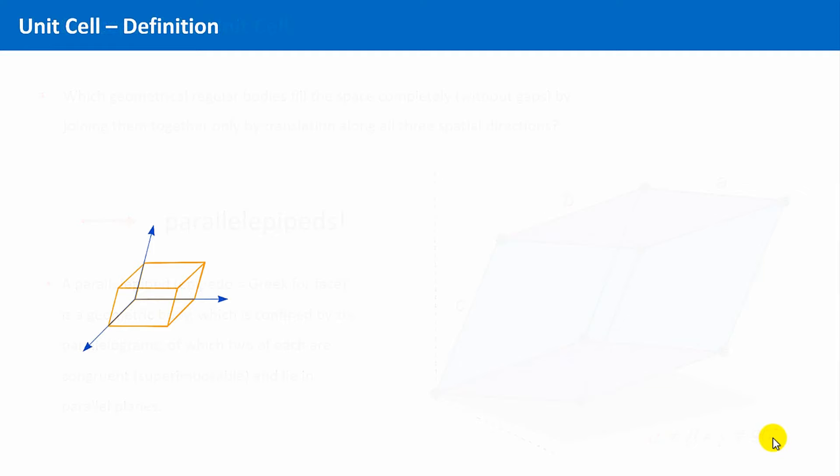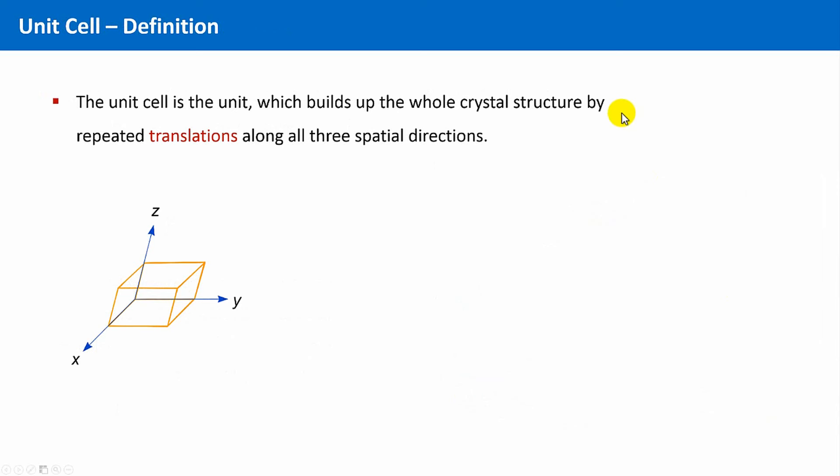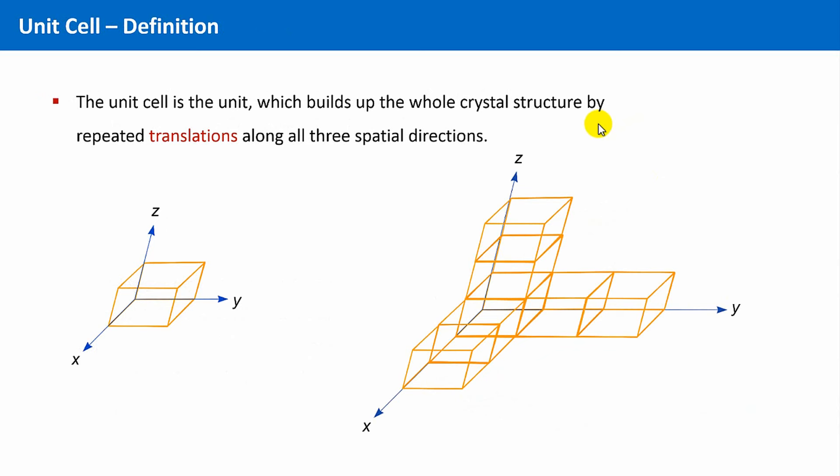Okay, now we can define the unit cell of a crystal. The unit cell is the unit, which builds up the whole crystal structure by repeated translation along all three spatial directions.